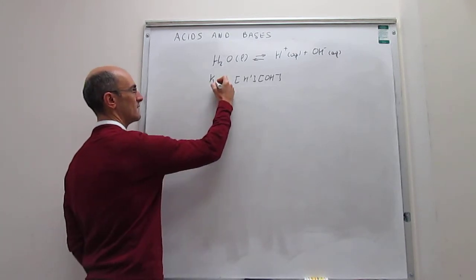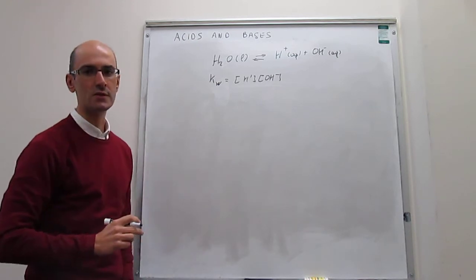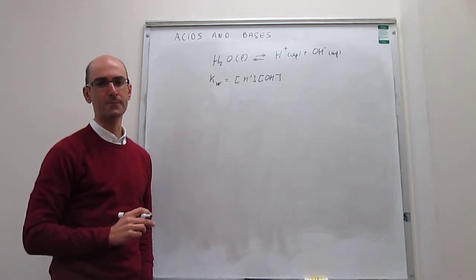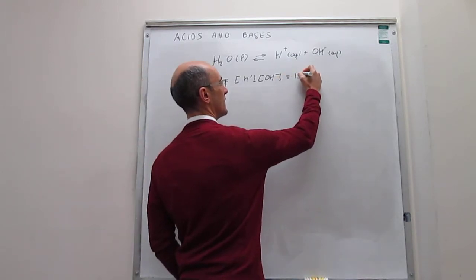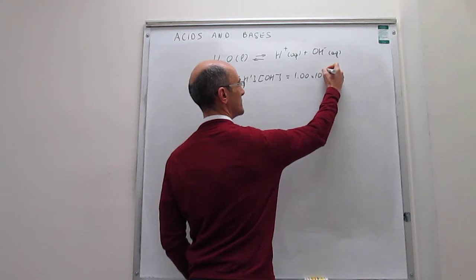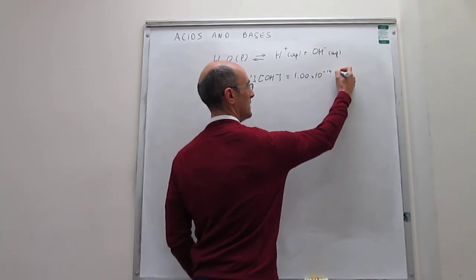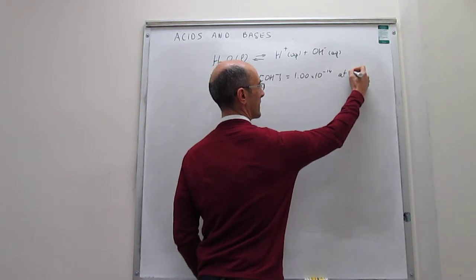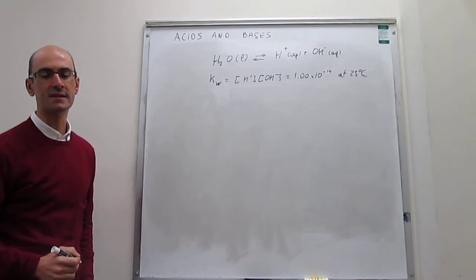This receives the value of K sub W, just to make sure that that's the autodissociation value for water. So we actually know this value quite well. This value is 1.00 times 10 to the minus 14 at 25 Celsius. And this value will become very important as we move forward in our study of acid-base chemistry.